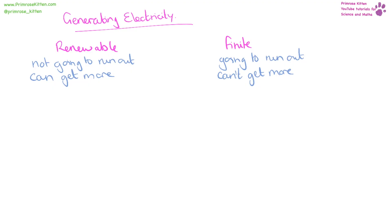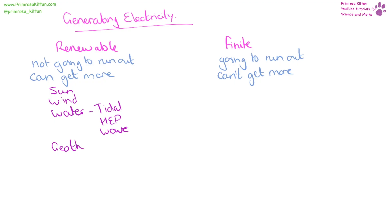When thinking about generating electricity, we can either do that with a renewable source or with a finite source. A renewable source is one that isn't going to run out and we can get more of it, whereas a finite source is going to run out — it's a fossil fuel. Renewable sources include things like the sun, the wind, water including tidal power, hydroelectric power, wave power, and geothermal power. Finite sources include coal, oil, gas, or nuclear power.